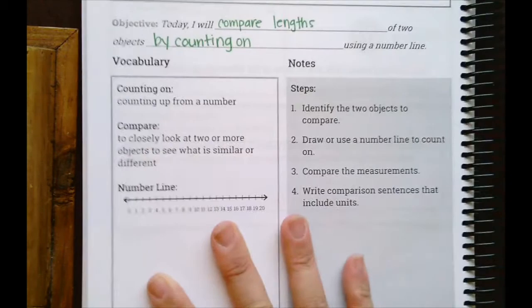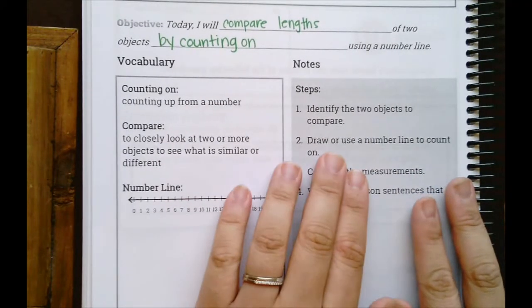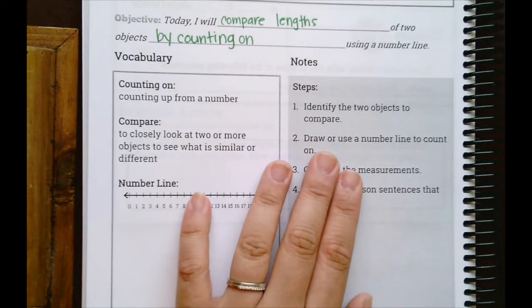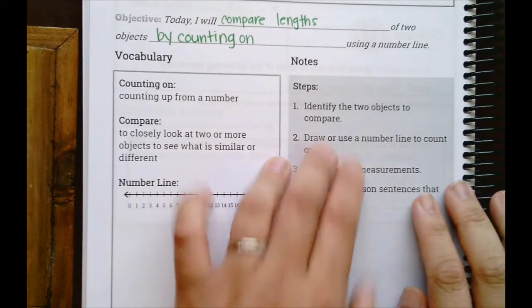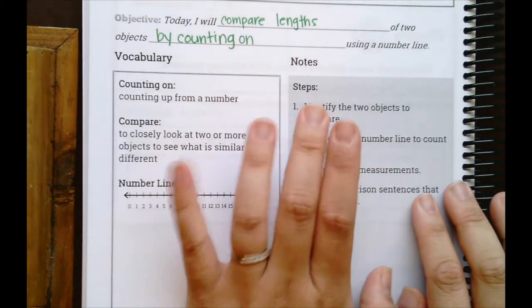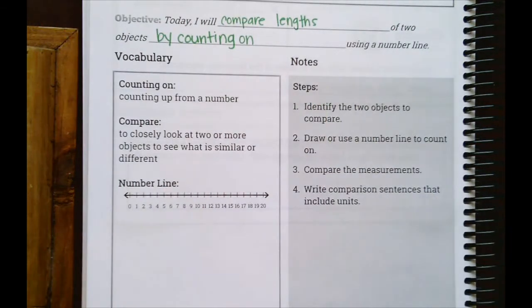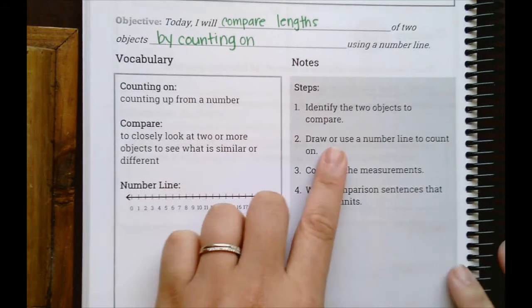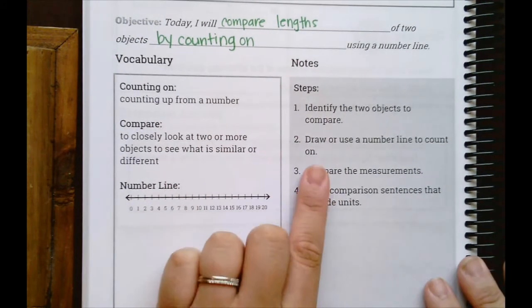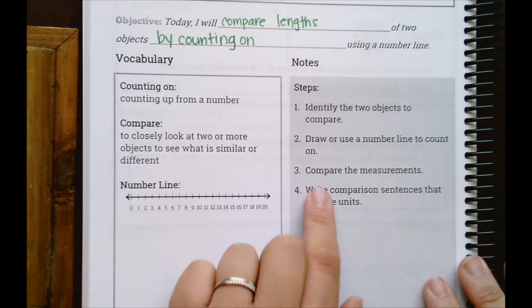So here are our steps. Number one is to identify the two objects to compare. We're going to be given a sentence or a scenario where we need to figure out what we're comparing. They're going to give us two objects and their lengths. It's our job to read the whole thing and figure out what the two objects are. Then number two says to draw or use a number line to count on. Notice it says draw or use — sometimes you'll be given the number line.